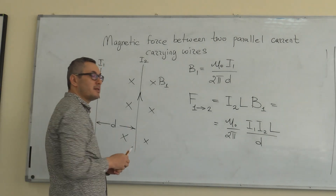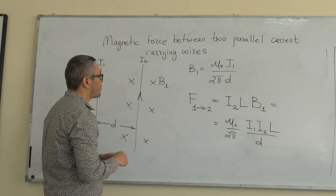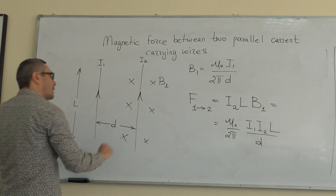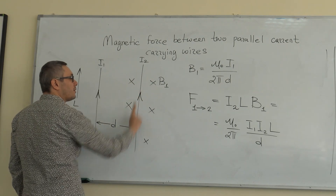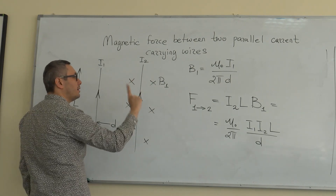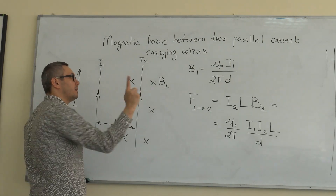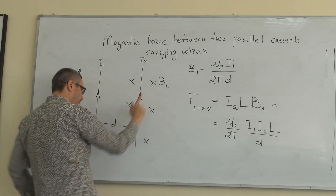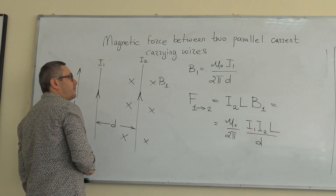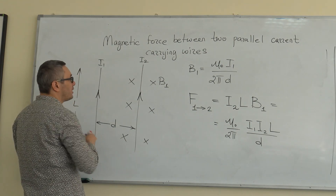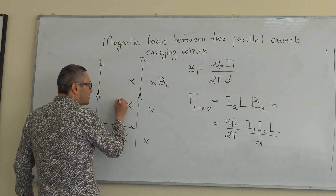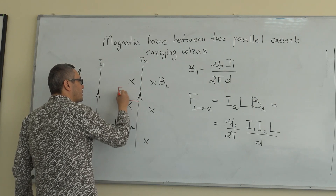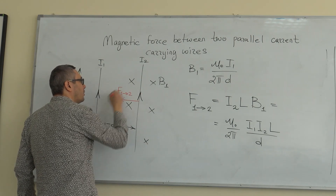Now let's find the direction of that force. Using the right-hand rule: current I2 is flowing up — that's the index finger; B is pointing into the board — middle finger; so F is pointing this way. So the magnetic force acting on the second current is pointing toward the first current. This is F1 on 2.